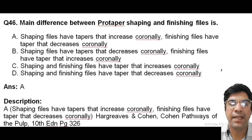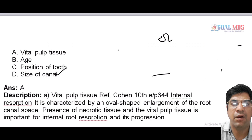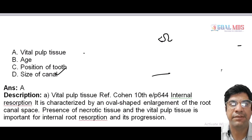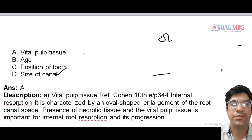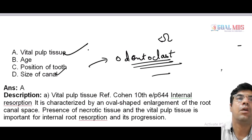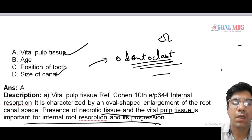The progression of internal resorption depends upon the vitality of the pulp tissue. The presence of vital pulp tissue is important for initiation and progression of internal resorption, which is characterized by resorption of dentine from the inside of the tooth root. The resorption includes activation of cells called odontoclasts that resorb dentine. The presence of necrotic tissue and vital pulp tissue is important for internal root resorption progression.